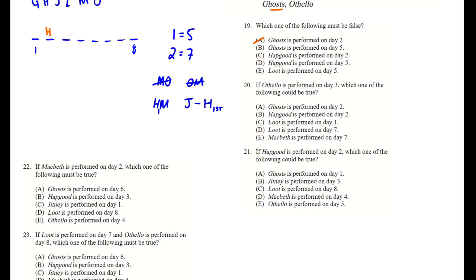If Hapgood is played on day two, it also has to be on day seven. We need J before the first H, and M after one of these Hs. We can place M, then J on day one which also goes to day five, then O and L — that still accounts for everything, so C doesn't look like a problem. What about H on day five? If H is on day five, that means H also has to be on day one, and we can't put J before it. The answer is D.